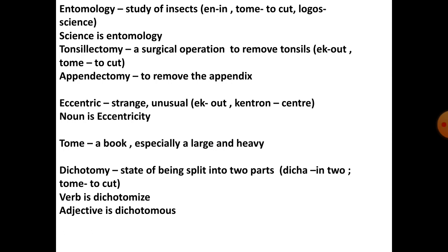Why is it called 'eccentric'? Pay attention to its root word: 'ek' means 'out' and 'center' means 'center'. When something goes out from the center, it becomes very unusual. The word we use for that is 'eccentric', and the noun form is 'eccentricity'.